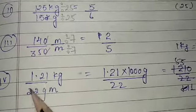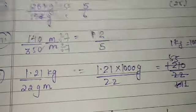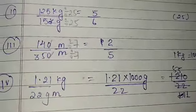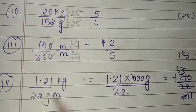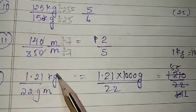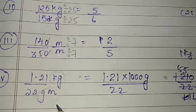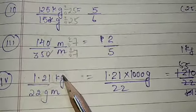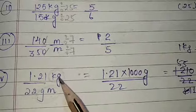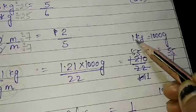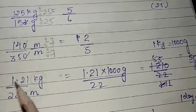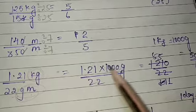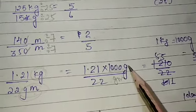Now this is the important question. 1.21 kg over 22 gram. You can see this is kg and this is gram. So either we have to convert this gram into kg or we have to convert this kg into gram. If we will convert this gram into kg, then we will get the answer in point. If we are converting this kg, then it is okay. It is your choice completely. Now I know this 1 kg is equal to 1000 grams.